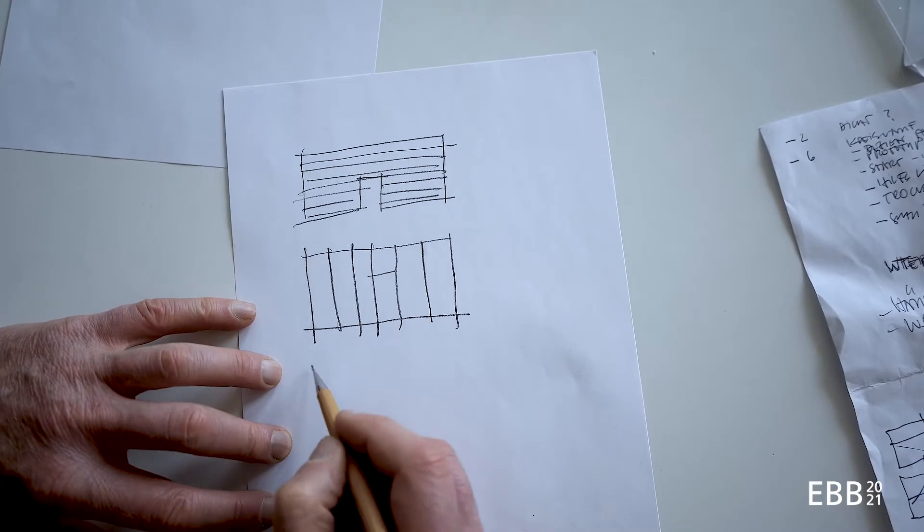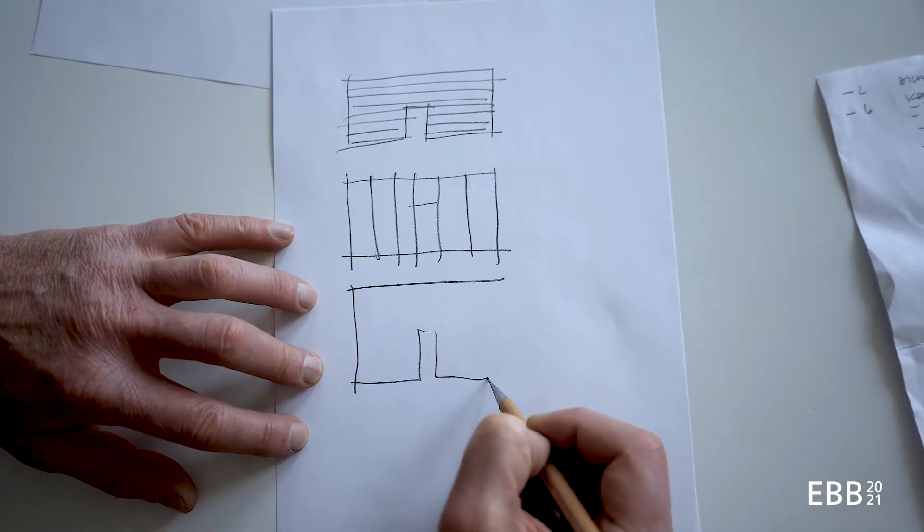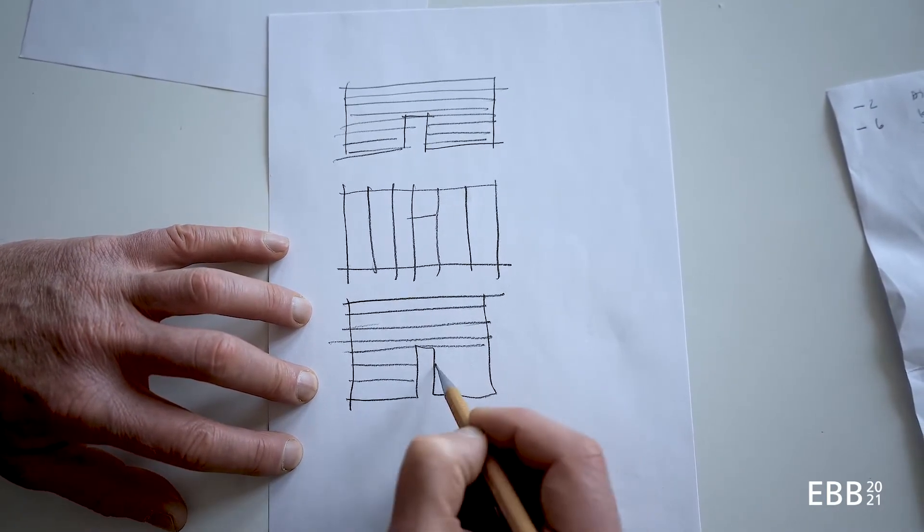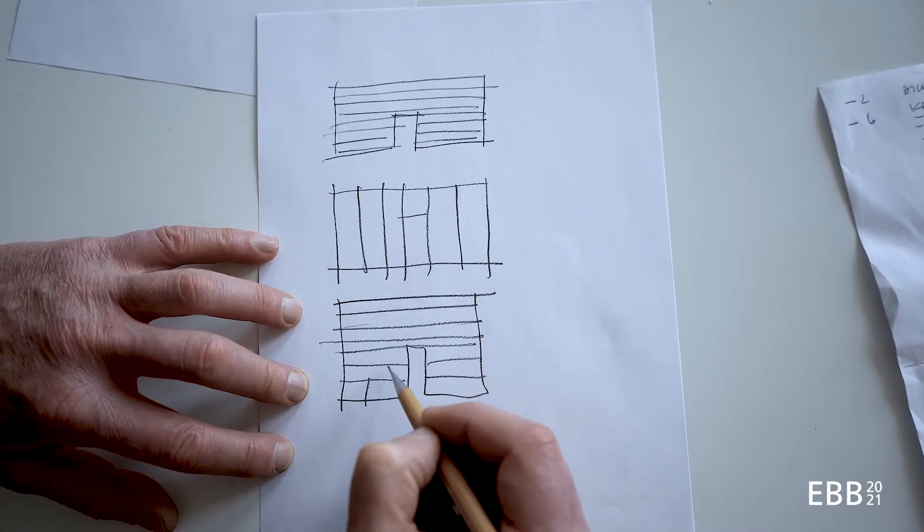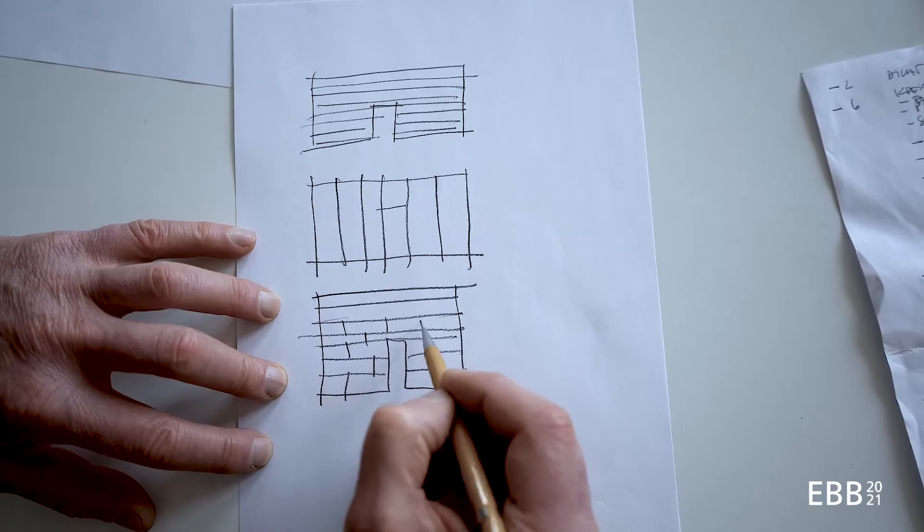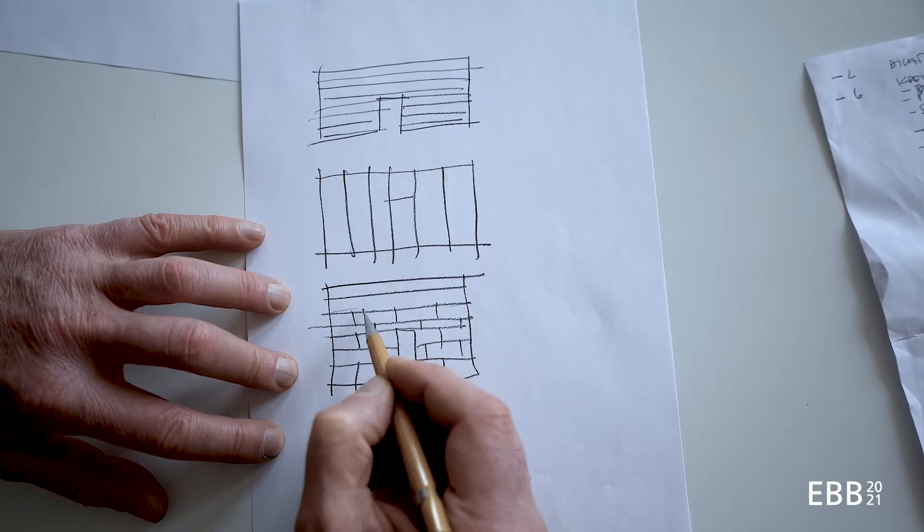Or I could build it out of masonry, which is similar to the logs, but it has vertical joints as well. And these vertical joints have to be alternated to give it rigidity. This alternation is called a bond.